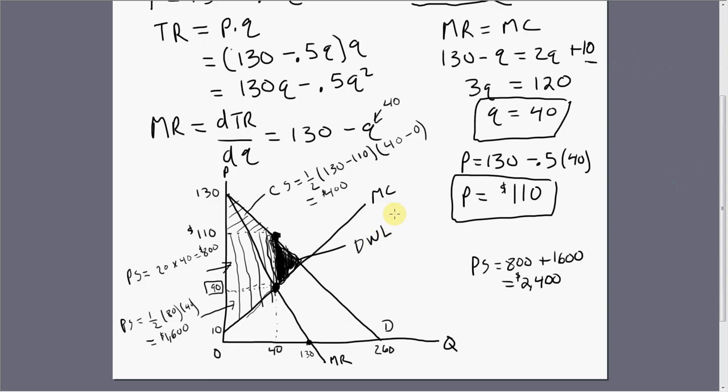Like all triangles, we're going to calculate as one-half base times height, but we're missing some information. We need this value right here, and it's not drawn very closely to scale, but this value is going to occur where price equals marginal cost. So 130 minus 0.5Q equals 2Q plus 10, the marginal cost. If you were to solve for Q, you'd get 48, so this value here is 48.